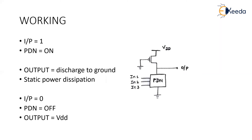Now see the working principle of your Pseudo-NMOS. We have a PMOS structure on the top with its gate connected to ground, and the pull-down network as usual used in static CMOS. If I give input as 1, what is happening to my pull-down network? My pull-down network is turned on because pull-down network is made up of N-MOSFETs. If I give 1 to pull-down network, my N-MOSFETs are turned on and my pull-down network is turned on. So my output will discharge to ground.